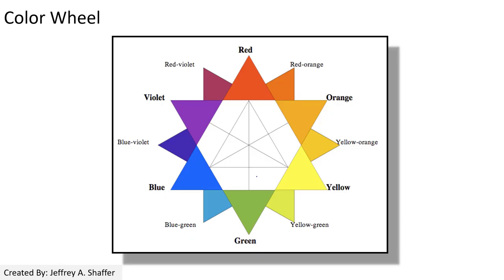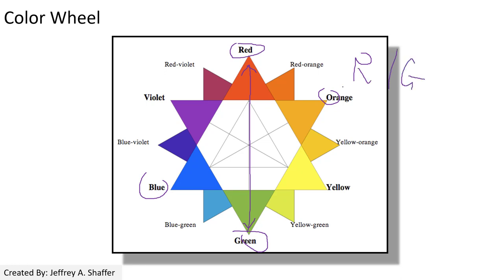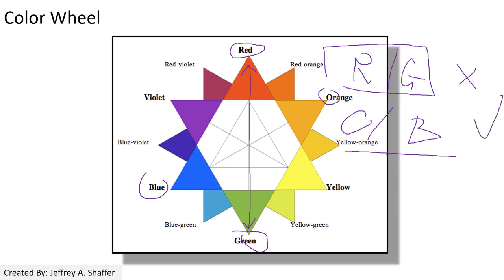The color wheel places different hues around a circle. Colors that are opposite each other on the wheel have the strongest contrast — they contradict each other the most. For example, red contrasts green, and blue contrasts orange. It's important to try to avoid using red and green combinations, because some people cannot tell the difference between those two colors. Instead, orange and blue is a good alternative.